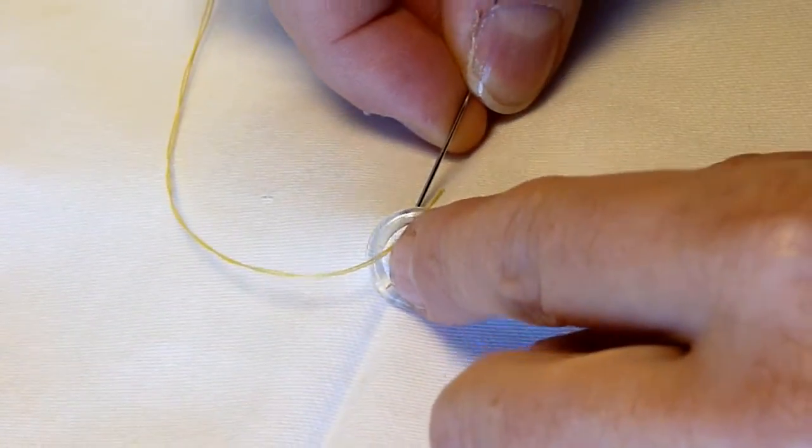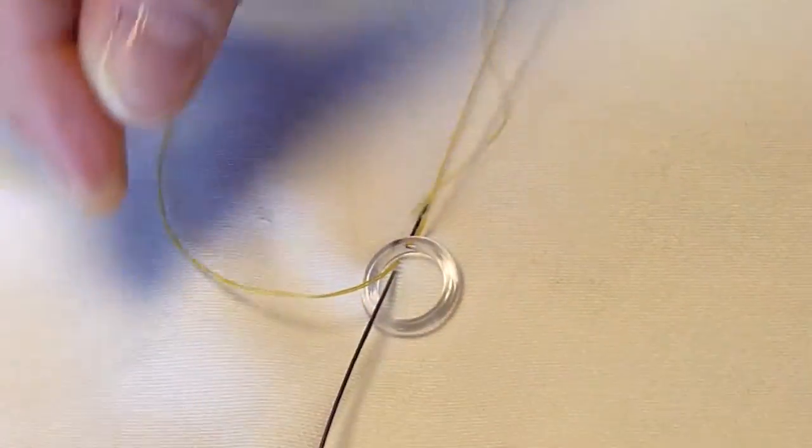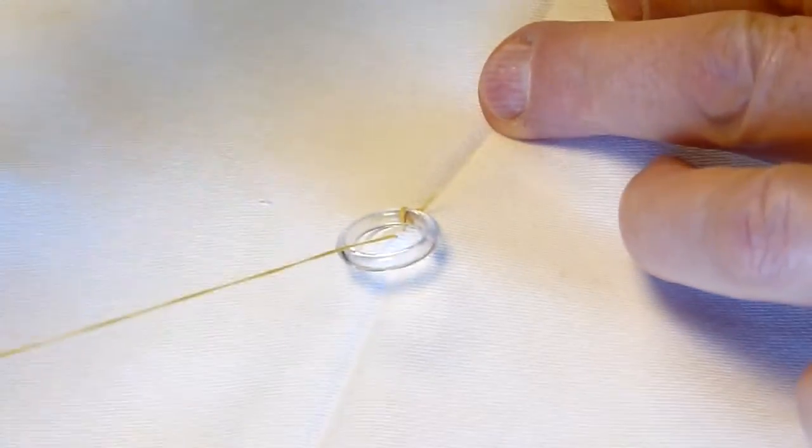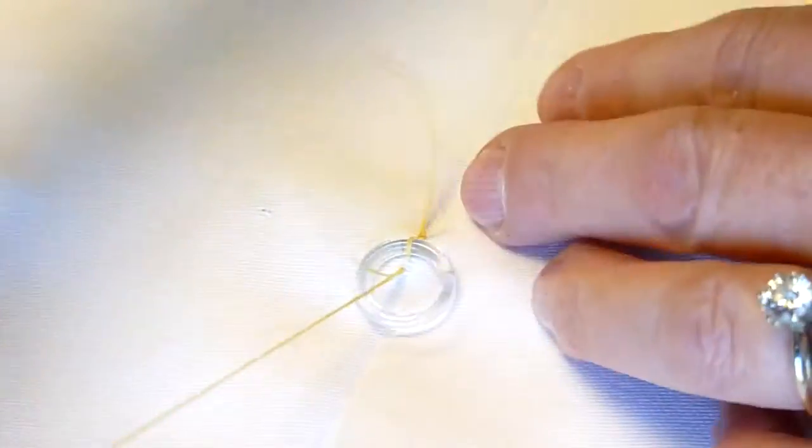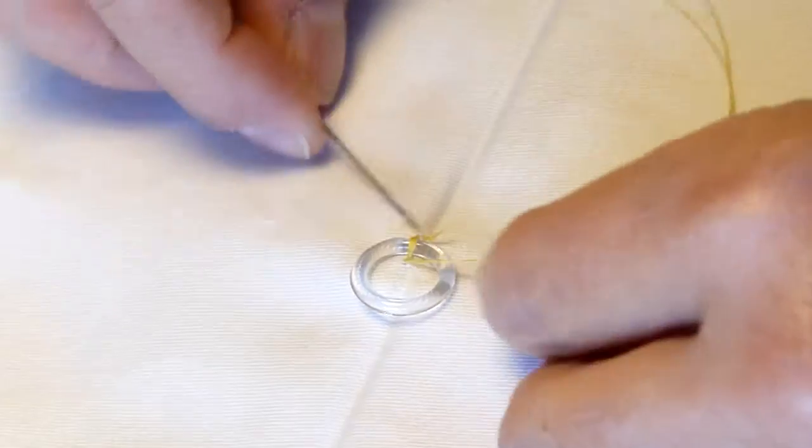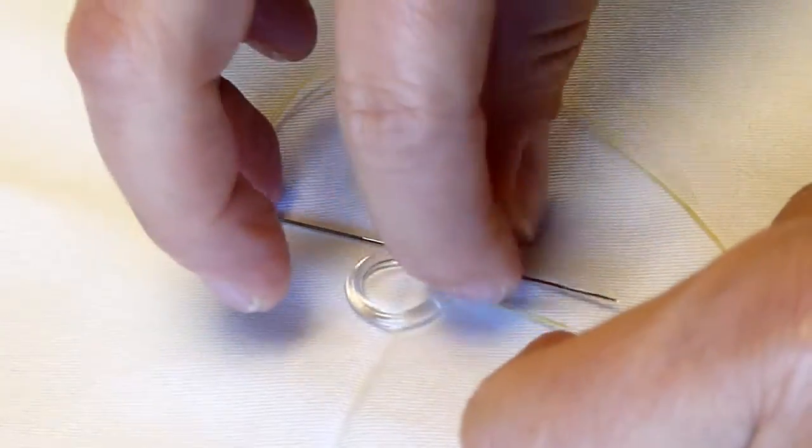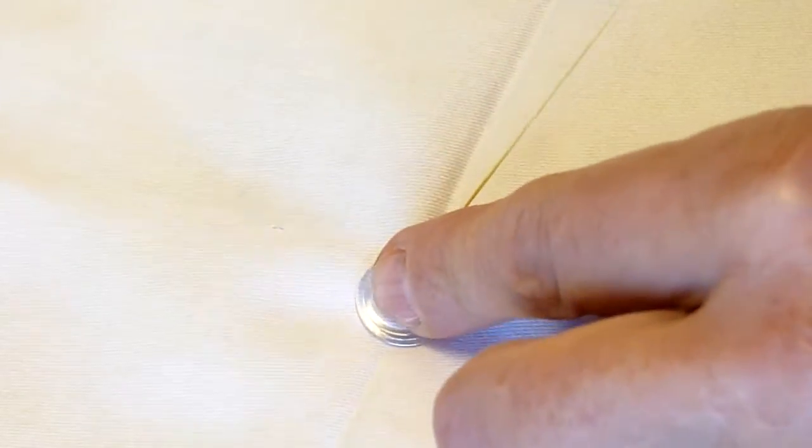Once I make my first stitch through, I take the pin out. That makes sure that I catch the face fabric and keeps the material together while I'm sewing and moving the shade around. This is actually a balloon shade.